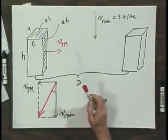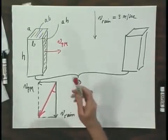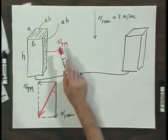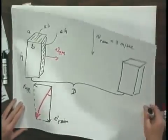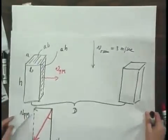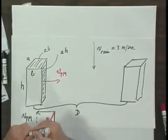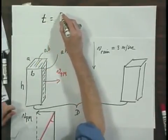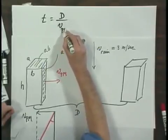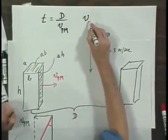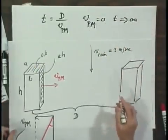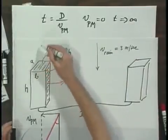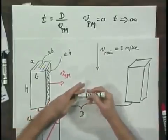Who is right, Peter or Miri? Let's first assume that the velocity of Peter and Miri is zero. If the velocity is zero, it will take them an infinite amount of time to go home, because the time to go home is distance D divided by their speed. For the case that V Peter-Miri equals zero, the time goes to infinity. During all that time, water will fall vertically on their head, and so they will get very, very wet.